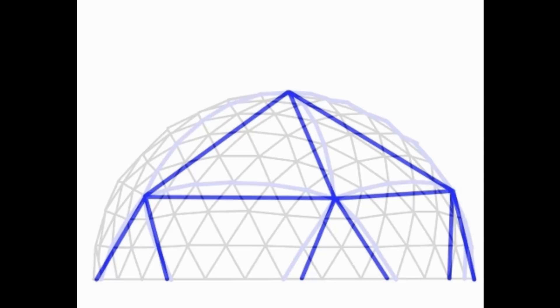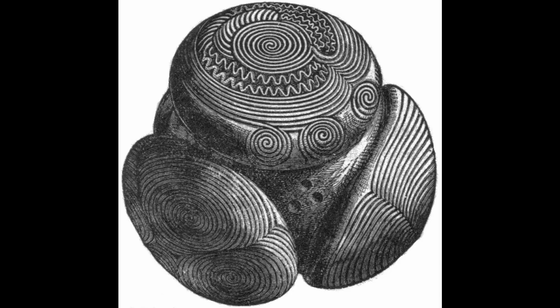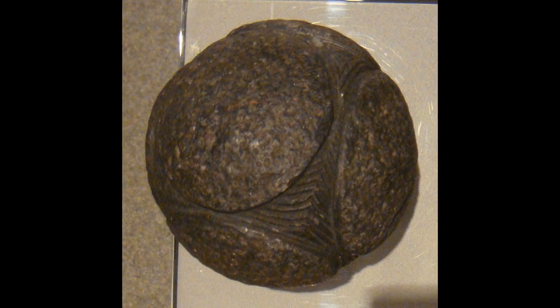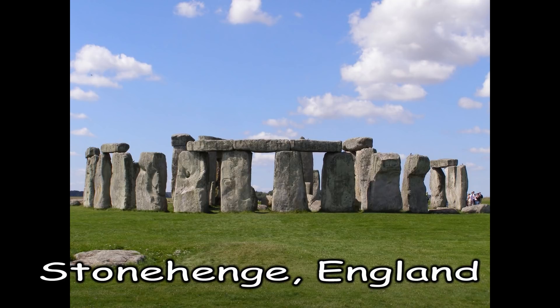The invention of the icosahedron began with man's interest in geometric spheres, such as these 5,000-year-old carved stone balls found in Scotland. It is believed these carved stone balls may have been used to roll the heavy stones used to erect ancient observatories like Stonehenge, showing an early connection between man's study of geometrical shapes and the study of the planets and stars.